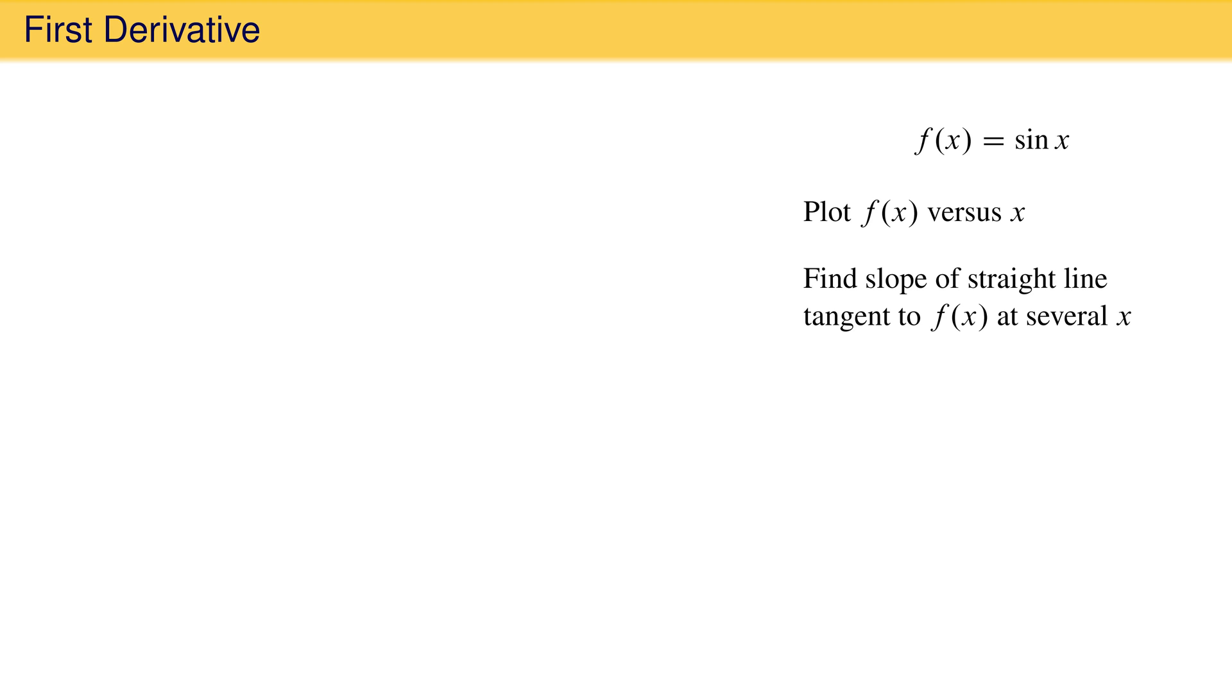Second, find the slope of the straight lines tangent to the function at several values of x. Third, plot the tangent slopes as a function of x on a new set of axes.